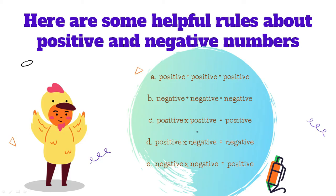Here are some helpful rules about positive and negative numbers. A: a positive number plus a positive number equals a positive number. B: a negative number plus a negative number gives you a negative number. C: a positive number times a positive number equals a positive number. D: a positive number times a negative number equals a negative number. E: a negative number times a negative number equals a positive number.